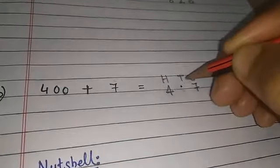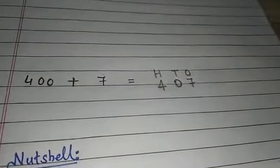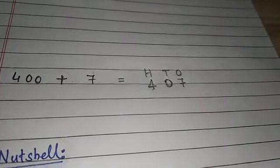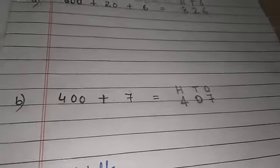Now see, this empty column we are just going to fill with 0. 4, 0, 7, which equals 400 plus 7.